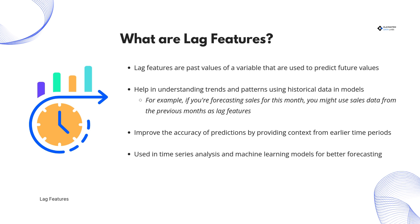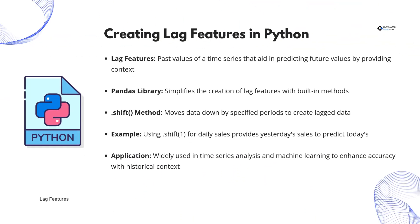Now let's explore how we create lag features. The pandas library in Python makes this process straightforward with built-in methods. The .shift method is particularly useful, allowing us to move data down by a specified number of periods to create lagged values.